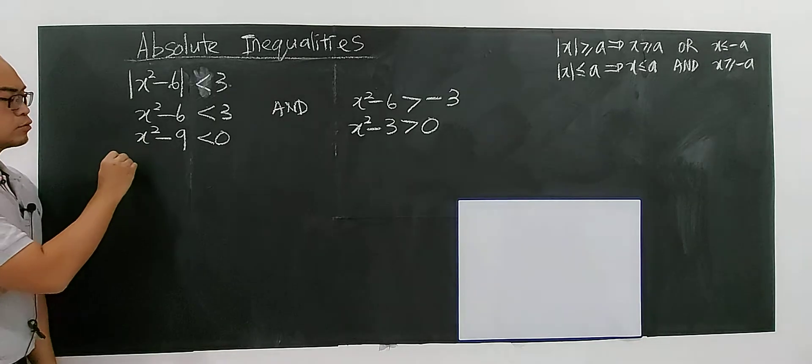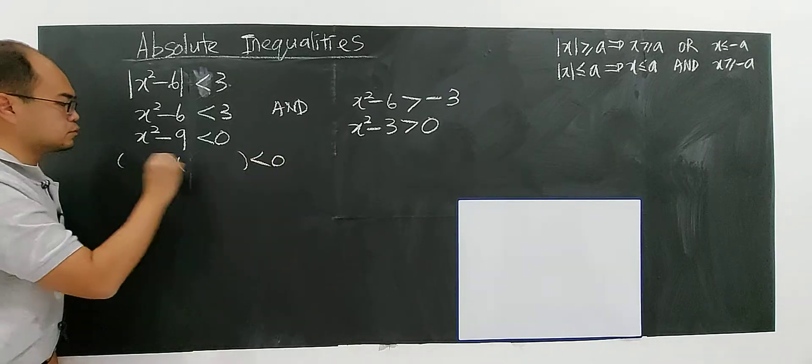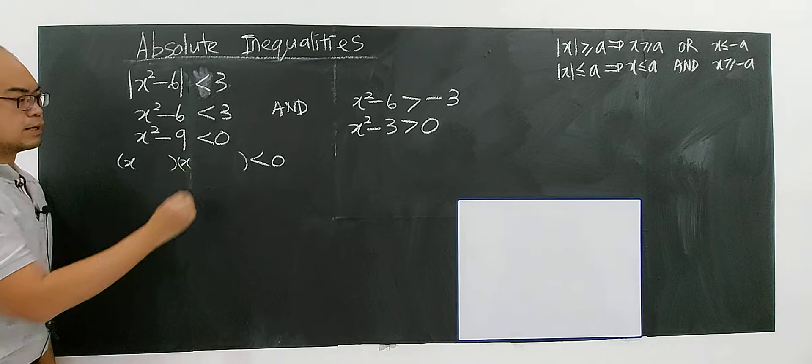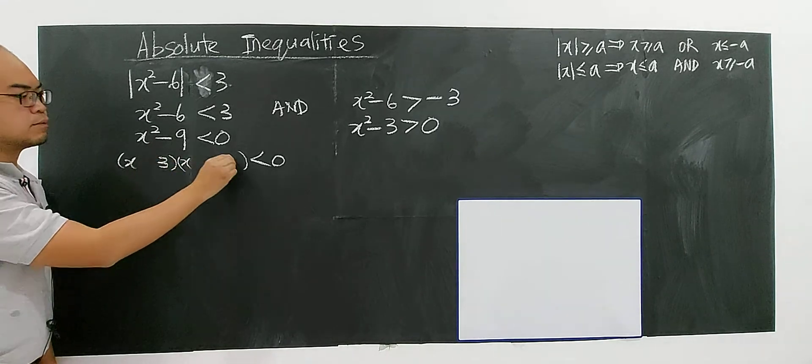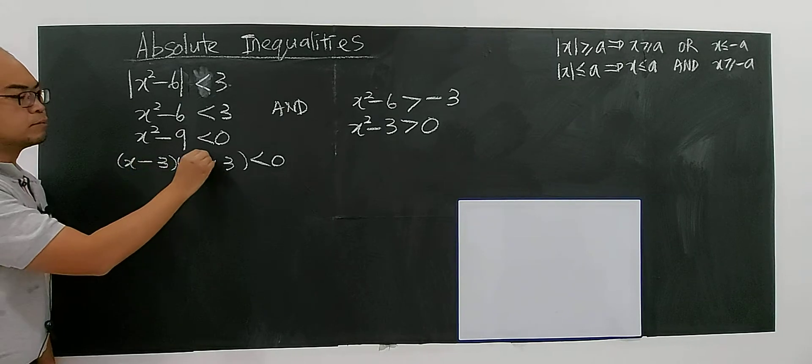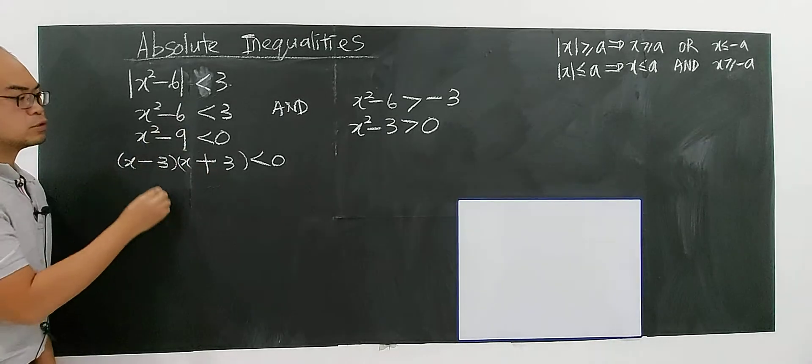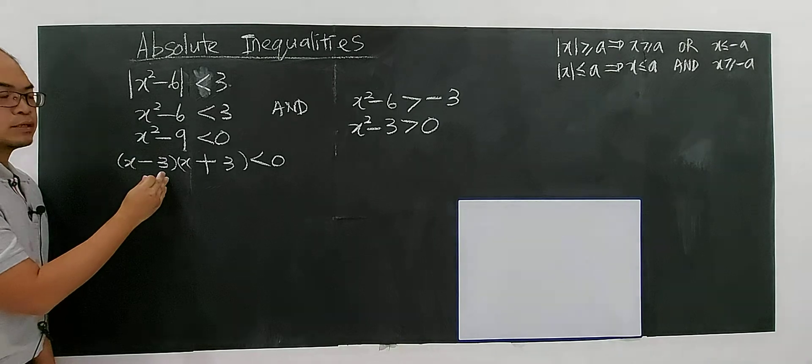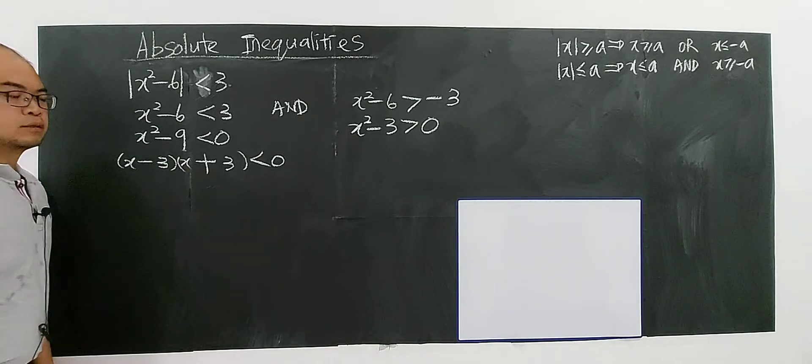So this one you can factorize. X times X, 3 multiplied 3, right? So you want negative 1 positive because 9 is 3 to the power of 2. So it will be x minus 3. The other one will be x plus 3, all right?